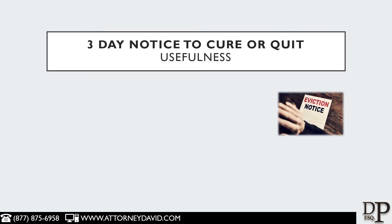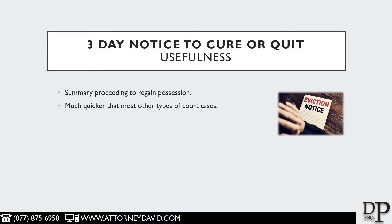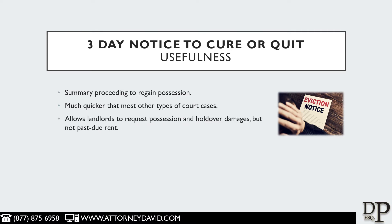The three-day notice to cure or quit is a summary proceeding to regain possession of the property. Eviction cases, including those based on a cure or quit notice, go much quicker than most other types of court cases because unlawful detainers by law receive priority over almost all other types of court cases. A non-disputed case may take a month to a month and a half, or two to two and a half months if the tenant fights the case — still much faster than most other litigation.